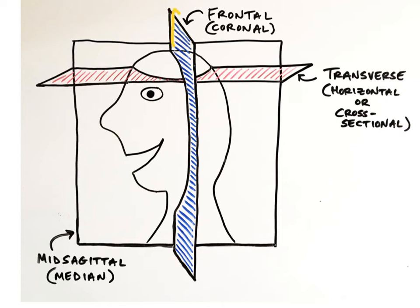A frontal or coronal plane divides the body or an organ into an anterior or front half and a posterior or back half.